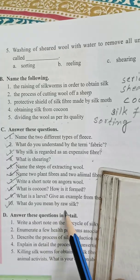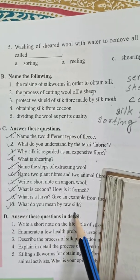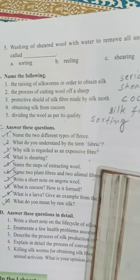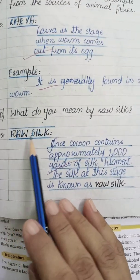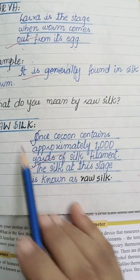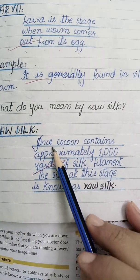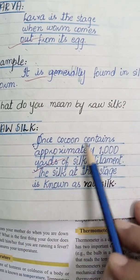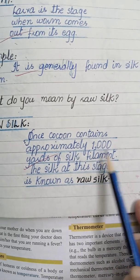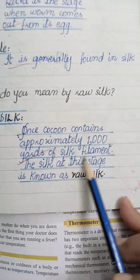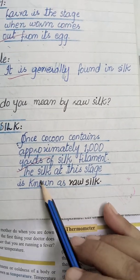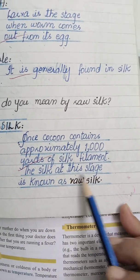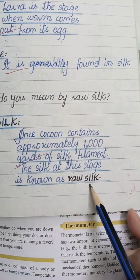Question number 10: What do you mean by raw silk? Give the heading of raw silk and write the answer: Once a cocoon contains approximately 1000 yards of silk filament, the silk at this stage is known as raw silk.